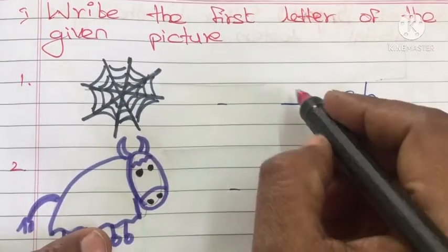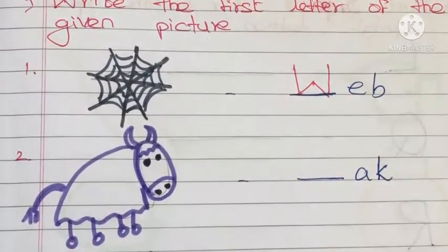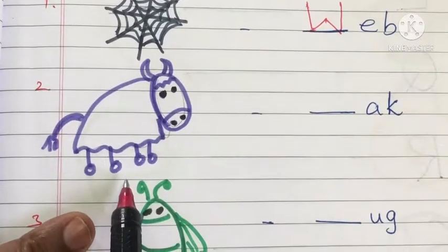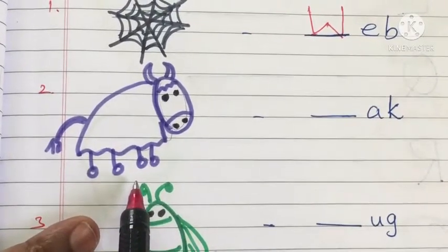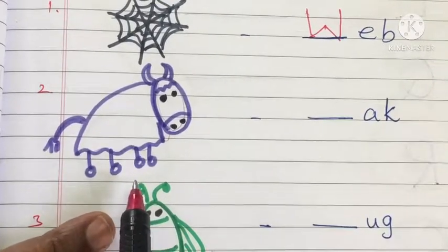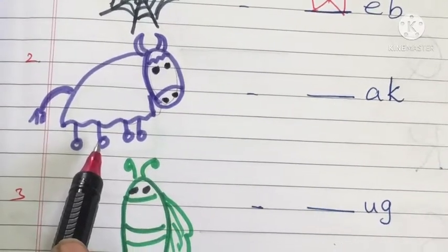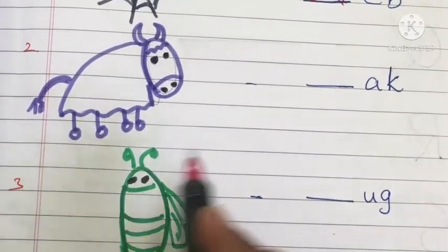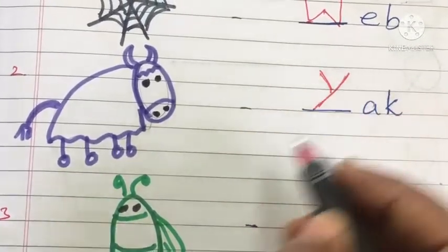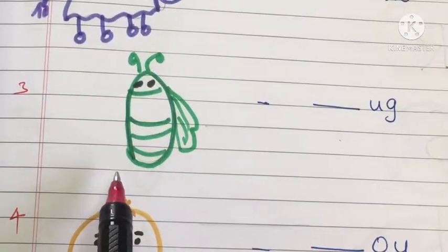See the next picture. What is this? It is a yak. Pronounce it: yak. What is the first letter? What is the phonic sound? It is Y. That is Y — Y for yak.